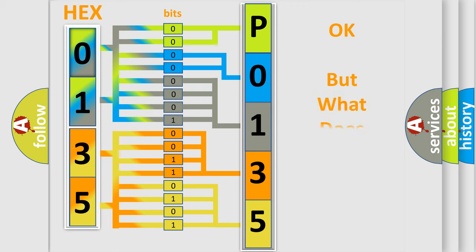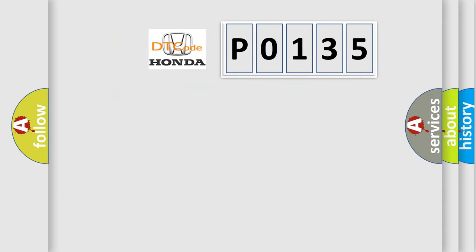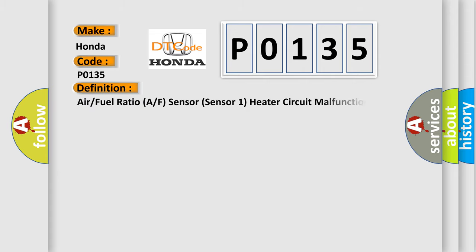We now know in what way the diagnostic tool translates the received information into a more comprehensible format. The number itself does not make sense to us if we cannot assign information about what it actually expresses. So, what does the diagnostic trouble code P0135 interpret specifically for Honda car manufacturers? The basic definition is: Air/Fuel ratio (A/F) sensor, Sensor 1, heater circuit malfunction.